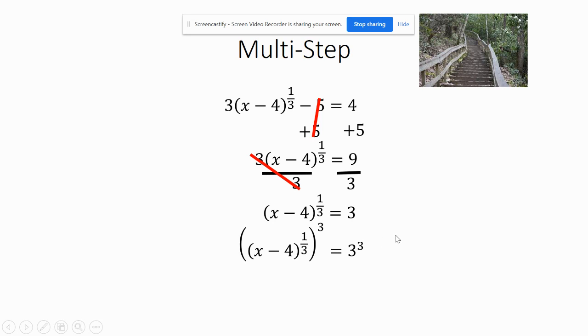So that would cancel out and give me x minus 4. And 3 cubed is 27. Add 4 to each side, so x is 31.